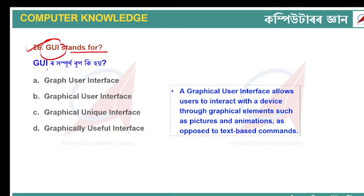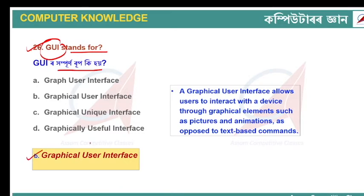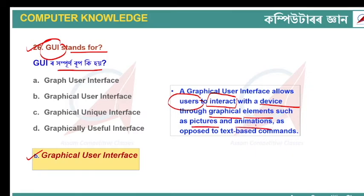GUI stands for Graphical User Interface. A graphical user interface is how a user interacts with a device or computer. The interface is where we interact with the device through graphical elements — pictures and animations — rather than text commands. That is the graphical user interface.